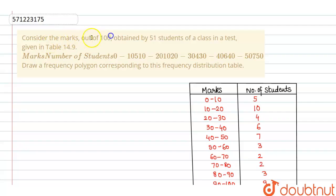Consider the marks out of 100 obtained by 51 students of a class in a test. Table is given. Marks number, draw a frequency polygon corresponding to this frequency distribution table. So according to the question, we have to draw the frequency polygon.